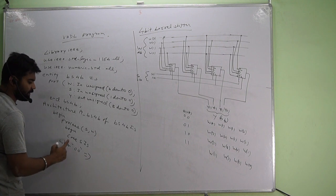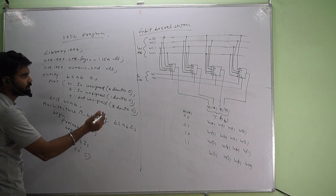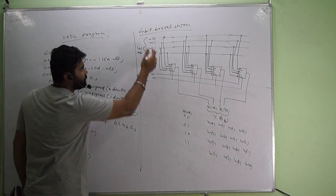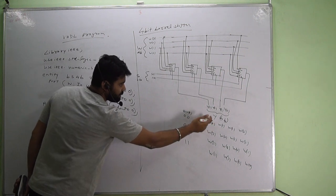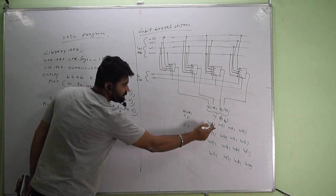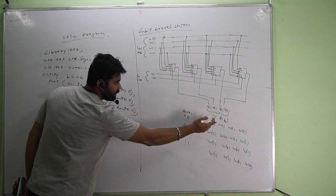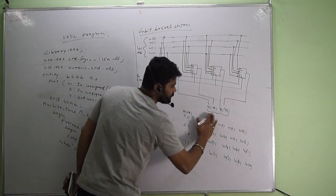When case s is 0 0, then what we have to do is, whatever be the w3 w2 w1 w0, for 0s it will be copied same as y3 as w3, y2 as w2. I'll write it here like this: y3, y2, y1, and y0.